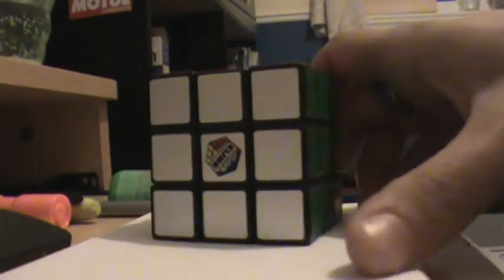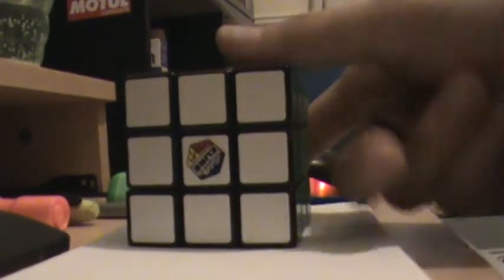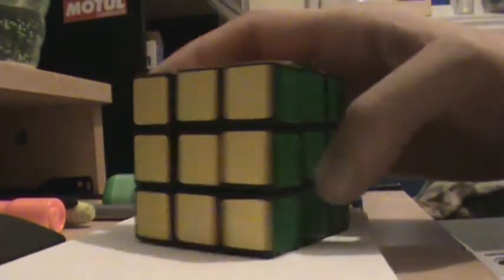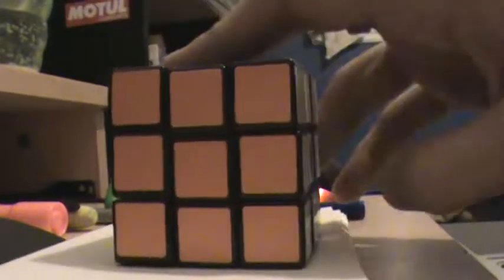Okay, first, you need to know that the white part is always behind the yellow part, always. And same for the green and the blue, same for the red and the orange.